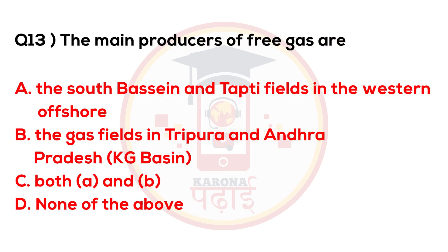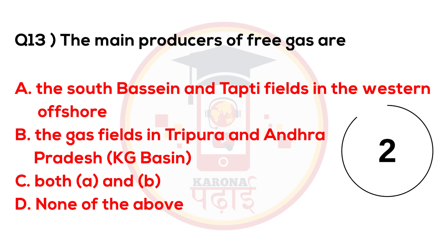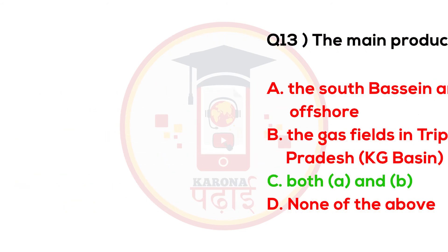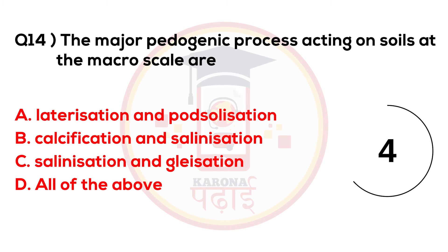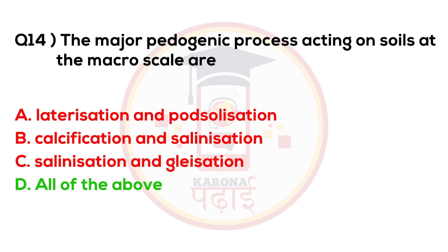The main producers of free gas are both A and B. The major pedogenic processes acting on soils at the macro scale are all of the above.